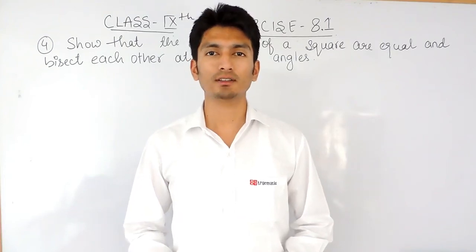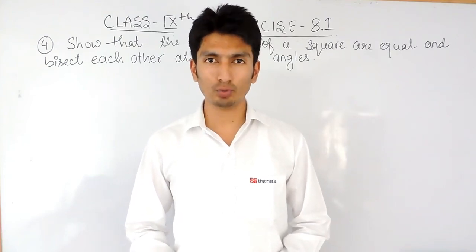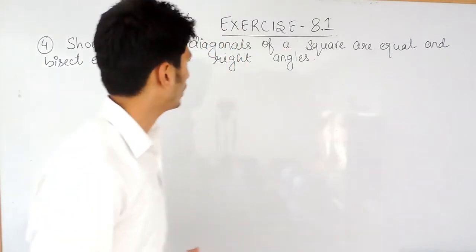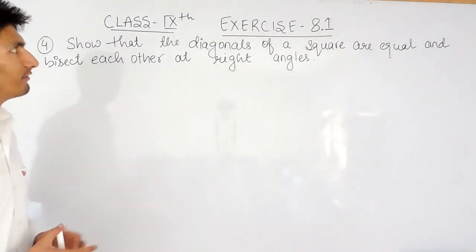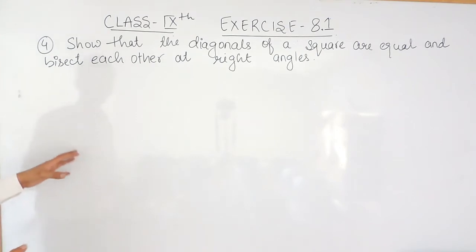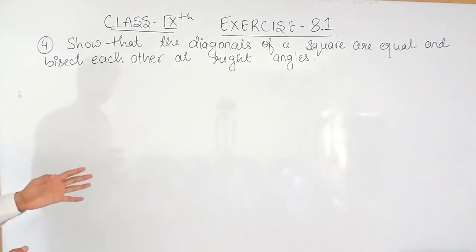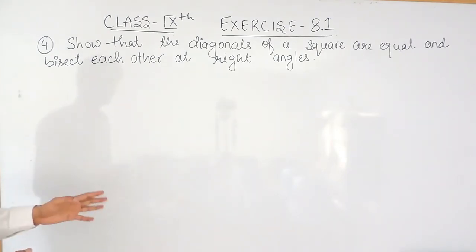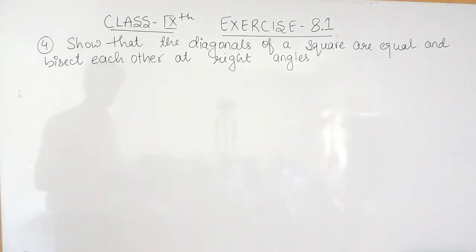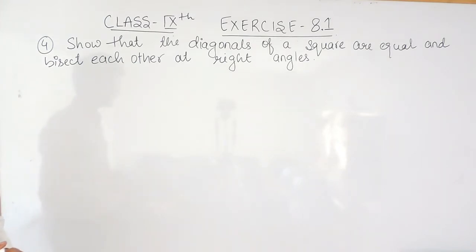Hello everyone, we are from True Maths and in this video we are going to solve question number 4 of exercise 8.1. The question says: you have to show that the diagonals of a square are equal and bisect each other at right angles.